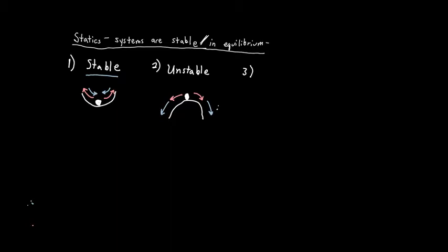Finally, we also have a third type called a neutral equilibrium point. The neutral equilibrium point is exactly what it sounds like — completely neutral. If I take a flat line, this represents a neutral equilibrium. I put a ball down, and if I move it to the left or to the right, it's not going to roll back to where it was — it's just going to stay put at its new position. This is the example of a neutral equilibrium point, and we need to keep these in mind as we work with statics.